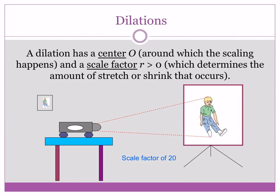A dilation has to have a center O — where it's going to be projecting from, like where the light comes through in a projector. And it has to have a scale factor — how much it's increasing by. With a projection, the scale factor has to do with how far away the projector is mounted from the screen. If it's too close, it would be too tiny; if it's too far back, it would be larger than the actual screen. When we're doing a scale factor on your computer screen, it will tell you — 150% of what the actual printed screen should look like.